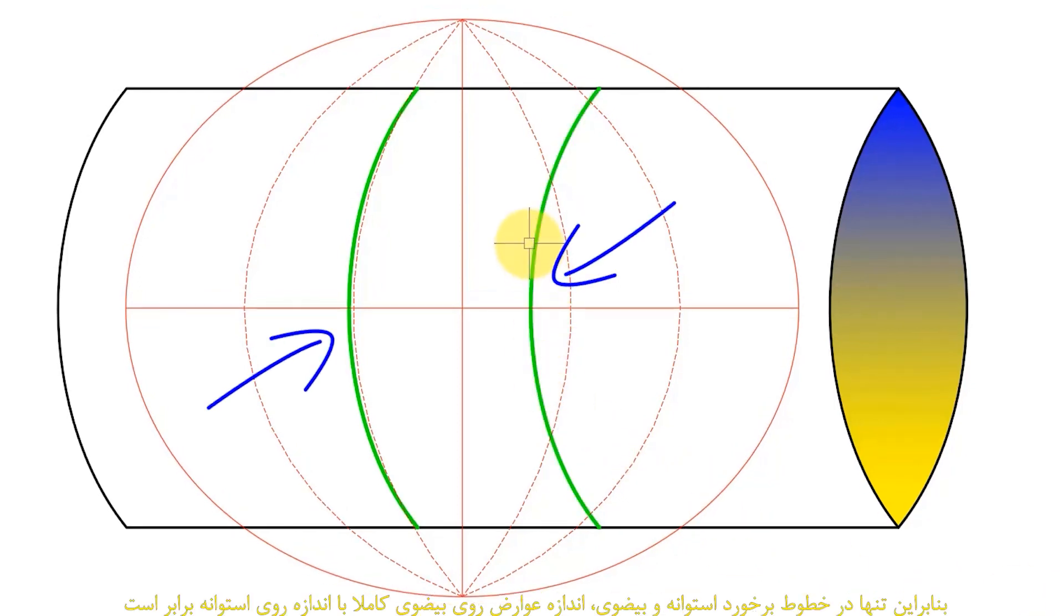only at the collision lines of the cylinder and the ellipse, the size of the objects on the ellipse is exactly the same as the size on the cylinder.